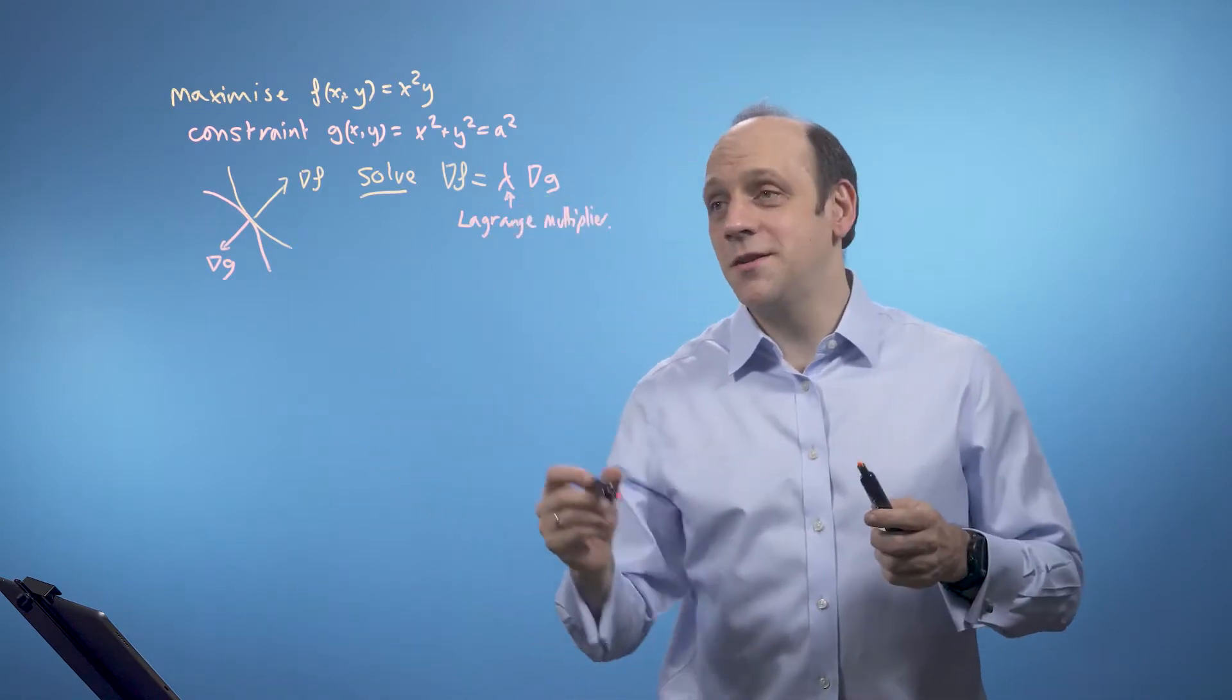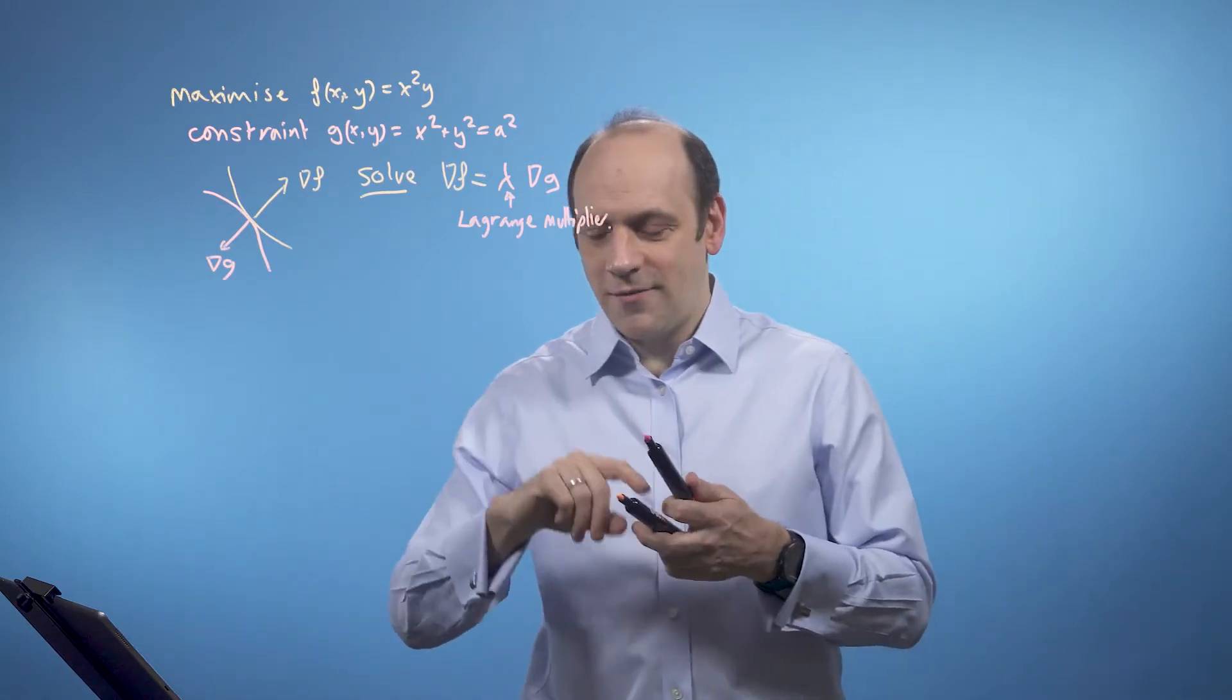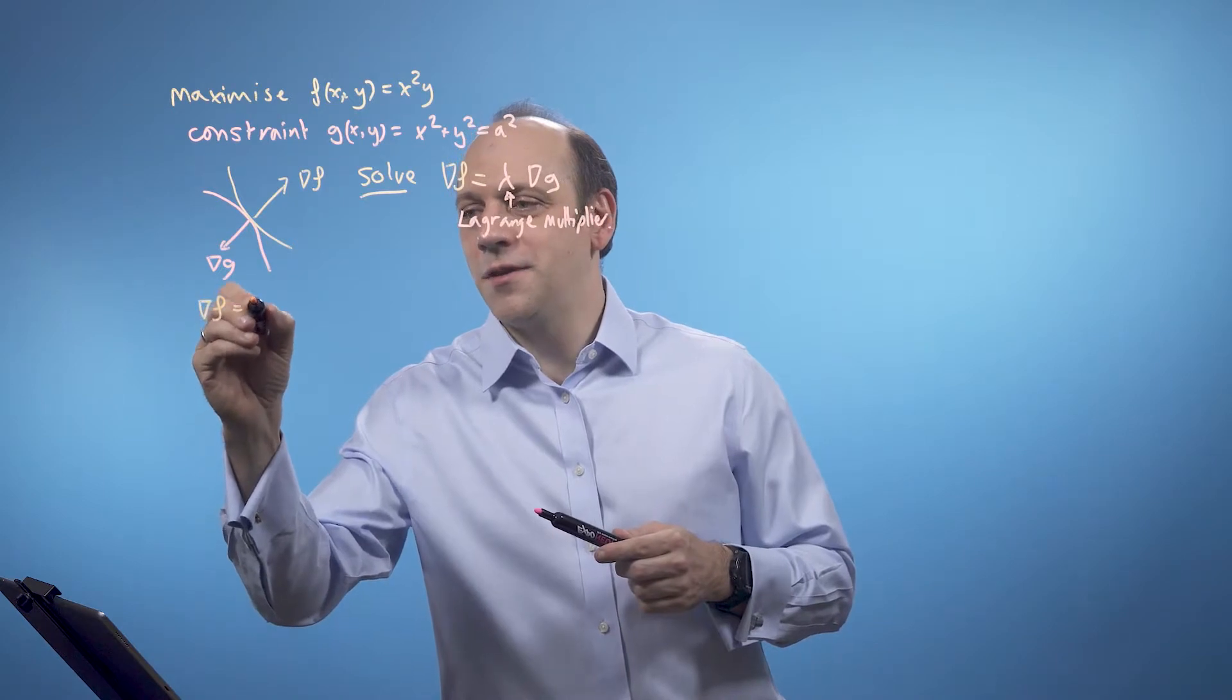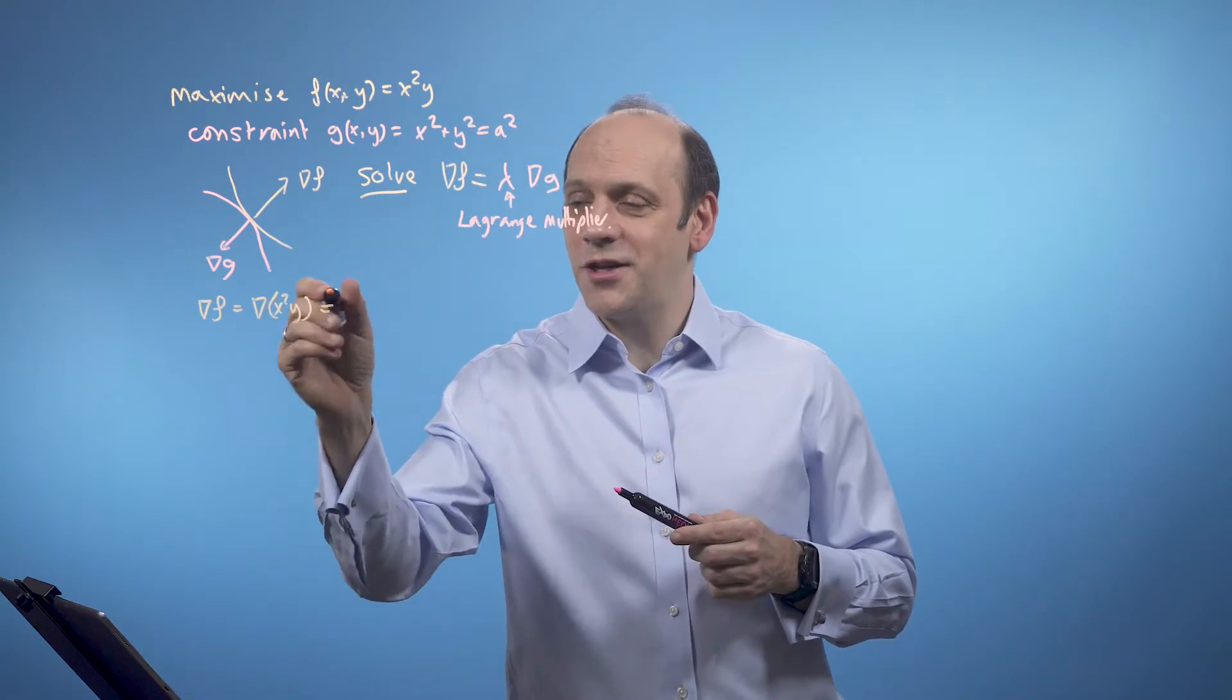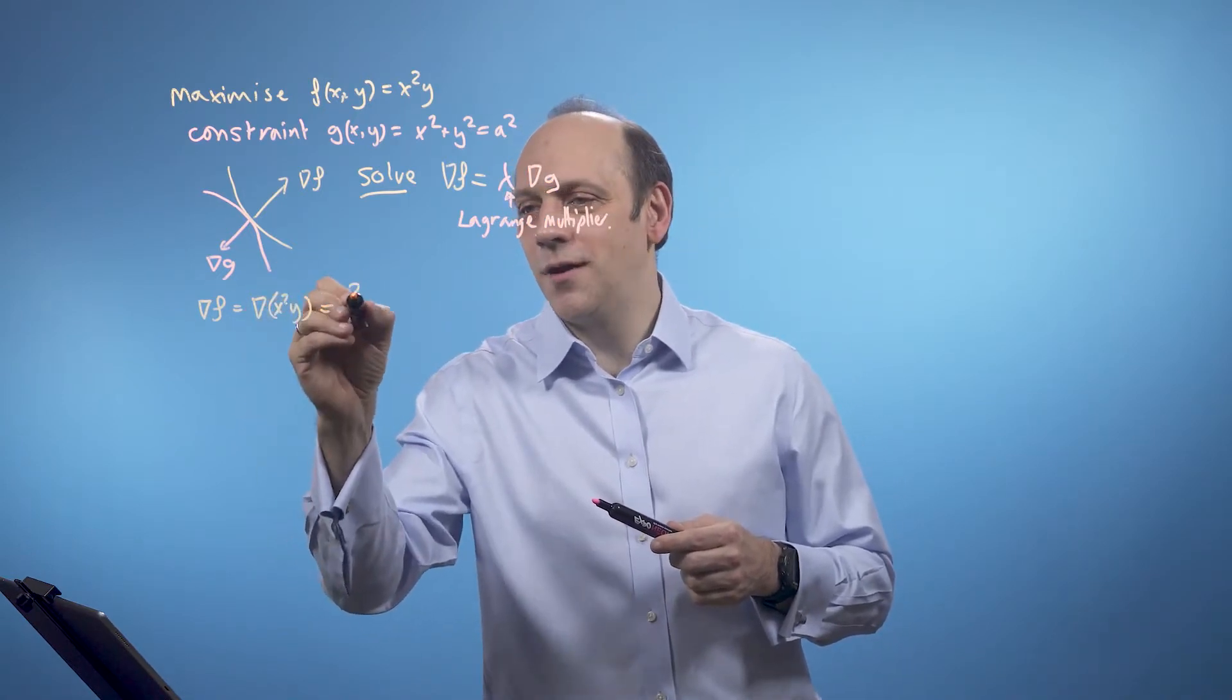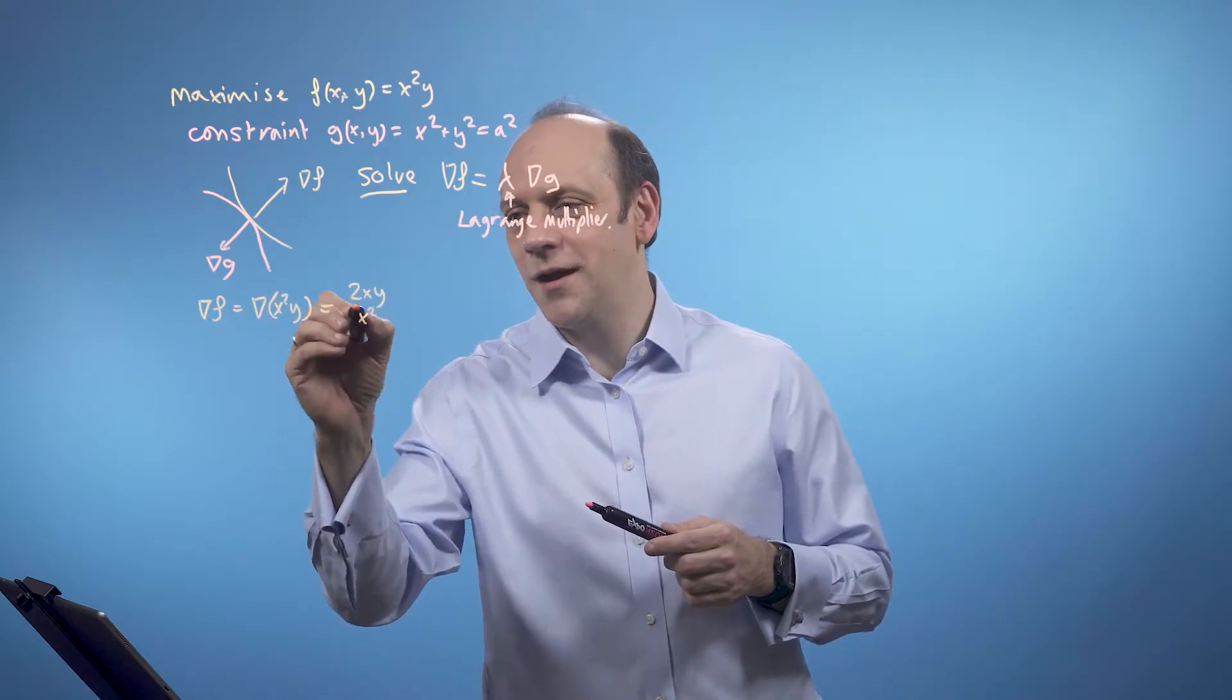That's all we really need to do. So we just need to set up this set of equations and then solve them. If I take grad f equal to the grad of x squared y, well that's equal to, if I differentiate for df dx, I've got 2xy. And if I take df dy, the y just goes and I've got x squared.